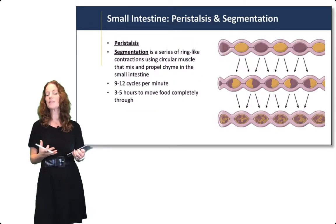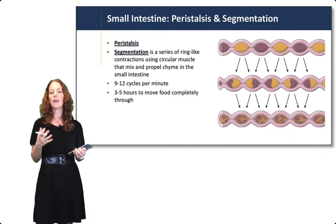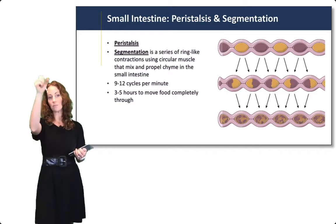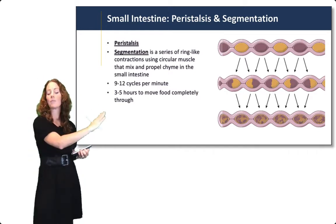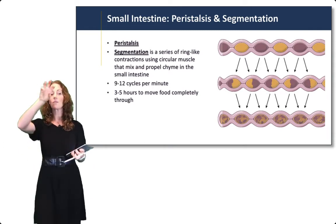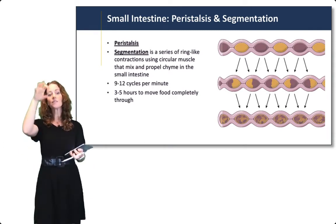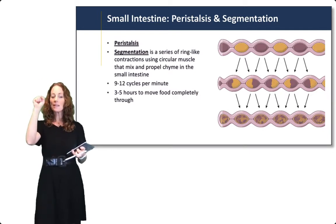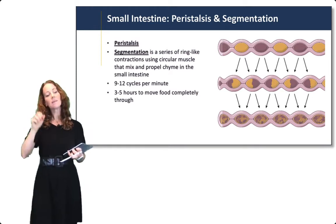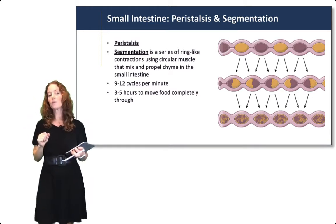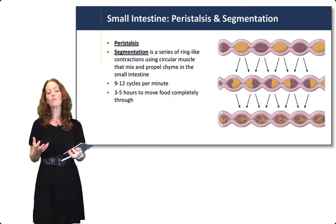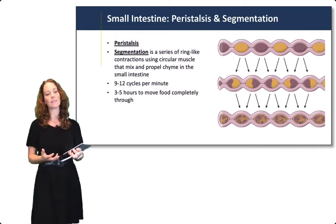Within all regions of the small intestine we have motility. Peristalsis is the contraction of circular and longitudinal muscles to move food through. Segmentation is a series of ring-like contractions using only the circular muscle that mixes and propels the chyme in the small intestine. Segmentation occurs at about 9 to 12 cycles per minute, so it takes about 3 to 5 hours to move food completely through the small intestine.